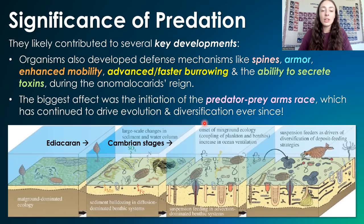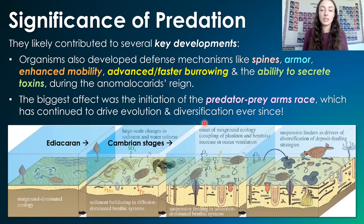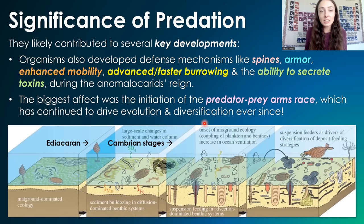The biggest effect that anomalocaridids had — not only on the ecosystems at the time they lived, but on all ecosystems afterward — was the initiation of this predator-prey arms race that has basically continued until today, driving evolution and diversification of both predators and prey organisms ever since.